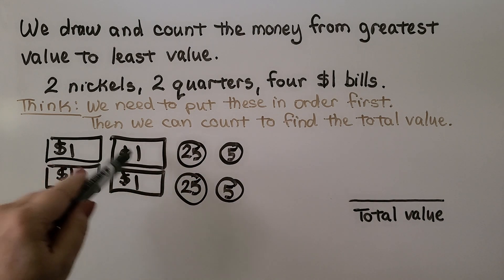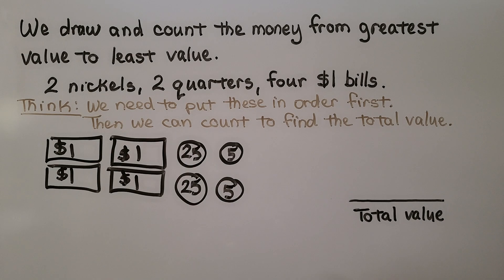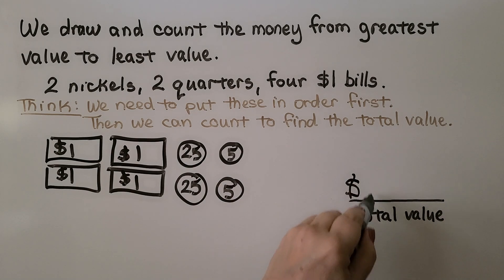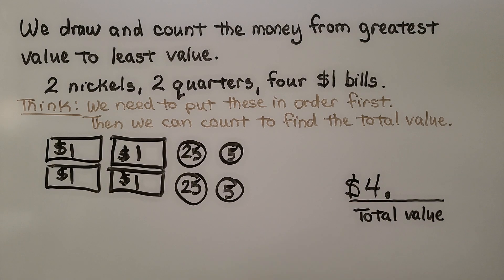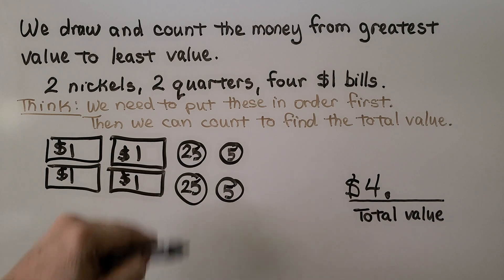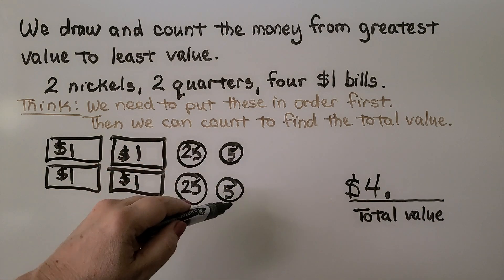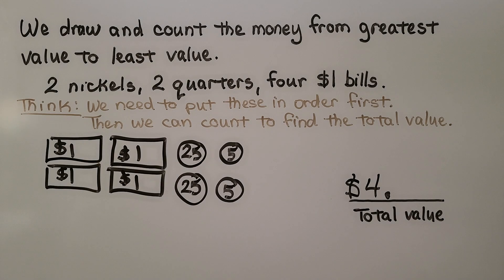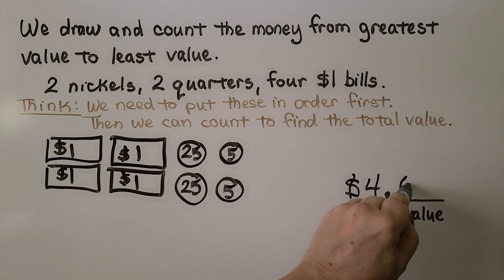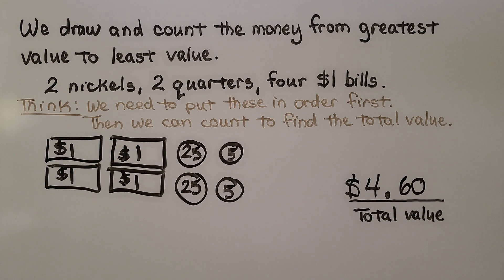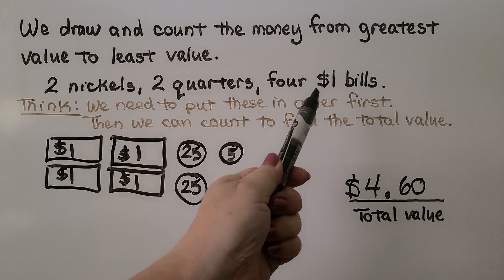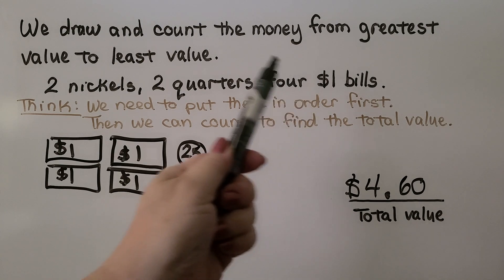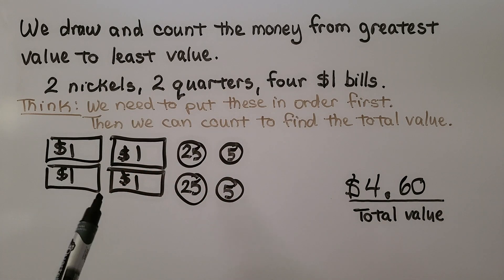Now we can count them. We have four one dollar bills, which is four dollars — remember to write the dollar sign and decimal point. Two quarters is 50 cents, and five and five is 10, so we have 50 cents and 10 more, which is 60 cents. It's four dollars and 60 cents. Even if the problem lists dollars last, you know dollars are worth more, so draw the greater value first.